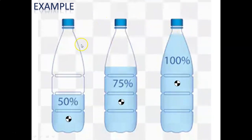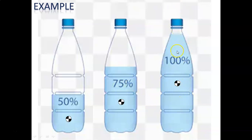There are three water bottles — one with 50% water, one with 75%, and one with 100% water. If you look at the center of gravity of each bottle, you can see how the center of gravity changes with the fill level.